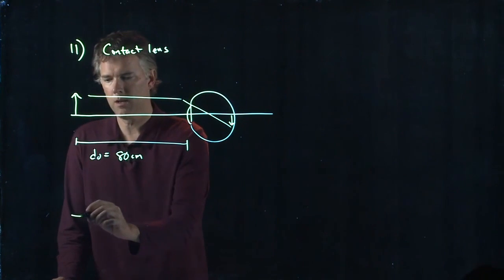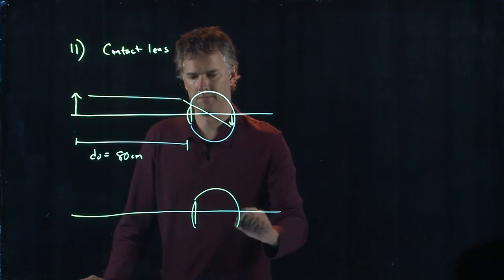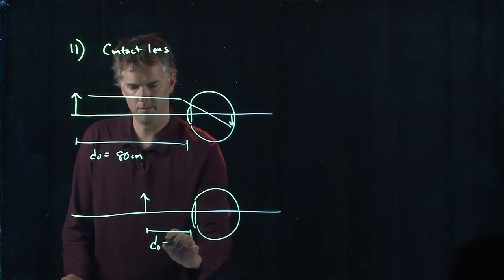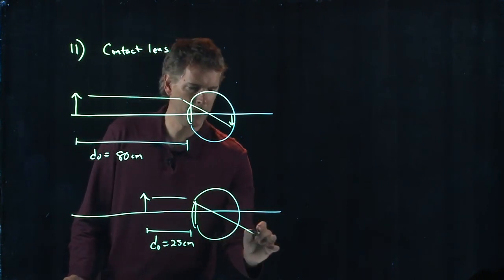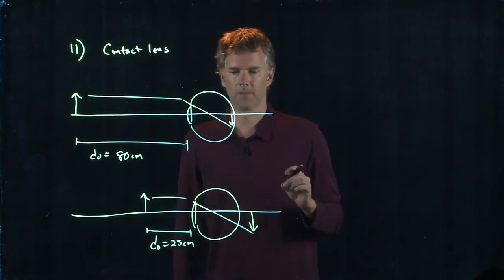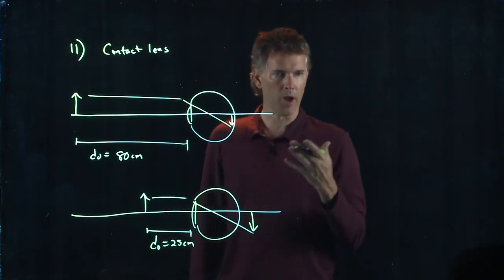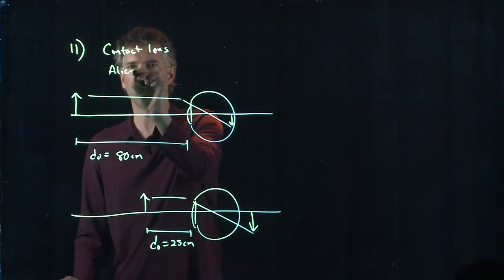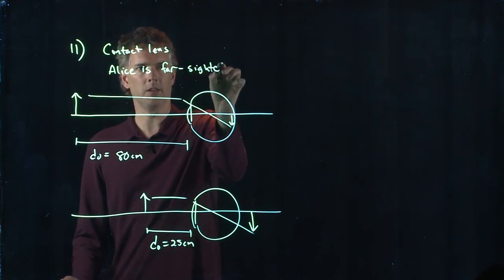But when that object comes in a lot closer to 25 centimeters, now she can't focus it on her retina anymore. It in fact is gonna focus behind her eyeball. So this is of course somebody that is farsighted. Alice is farsighted because she can see things that are far away but she can't see things that are close.